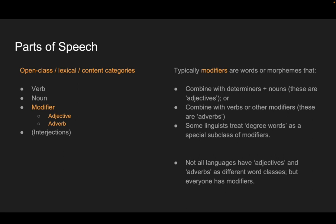Modifiers come in lots of varieties. In English there's a very clear distinction between adjective and adverb — both kinds of modifiers — though not all languages maintain that distinction, and we'll look for it maybe in Ute. Modifiers can combine with a determiner plus a noun to modify the noun; that's when we call them adjectives. They may combine with verbs or even with other modifier elements, and when they do that we call them adverbs. Sometimes we talk about degree words like 'very' as a special kind of modifier.